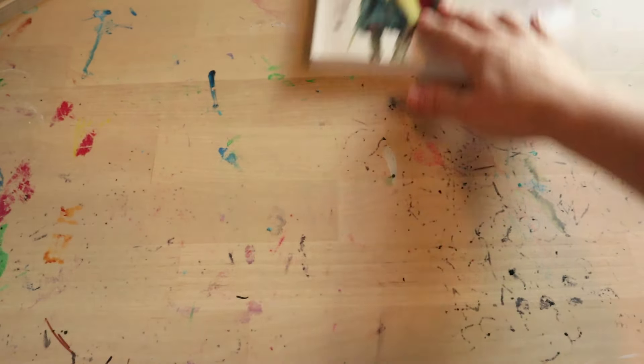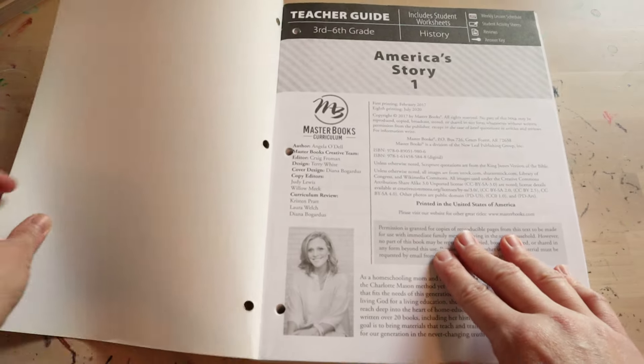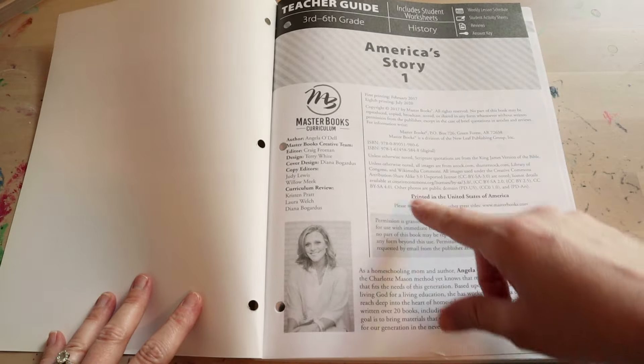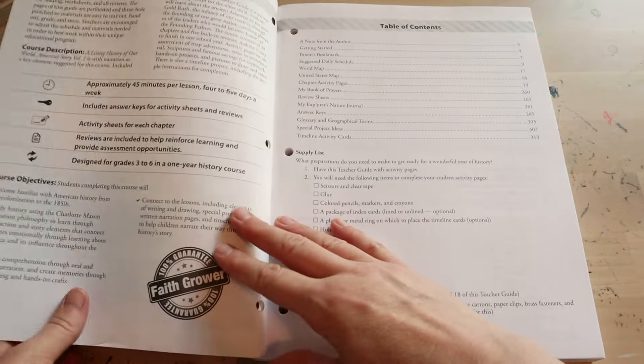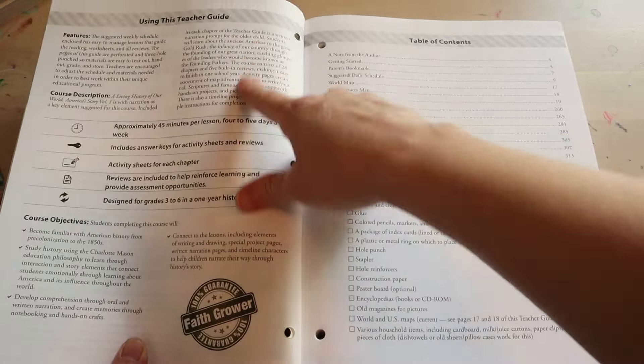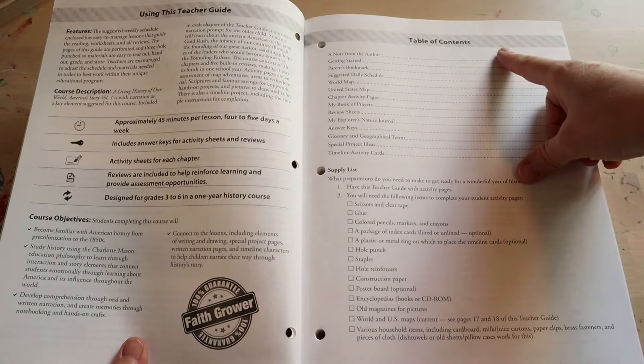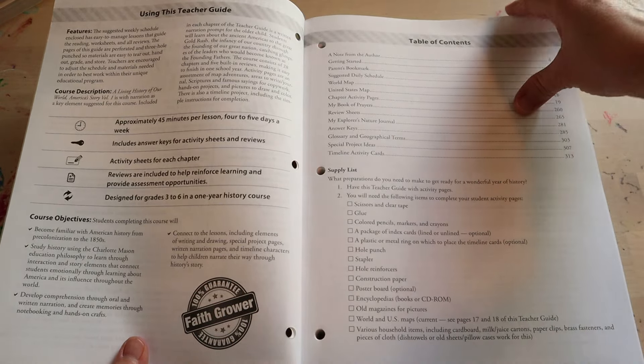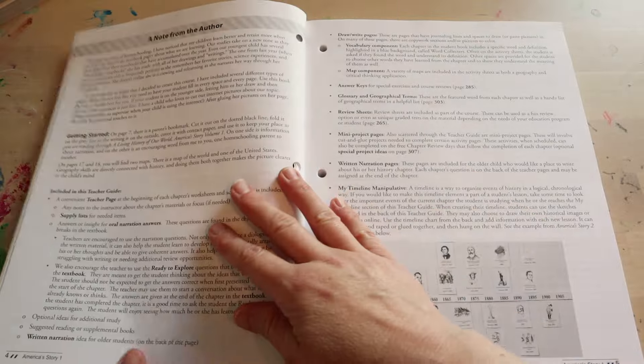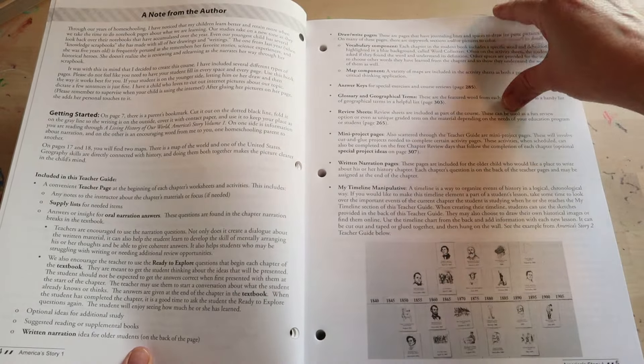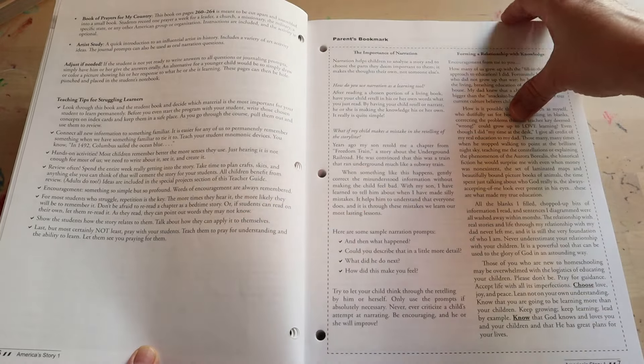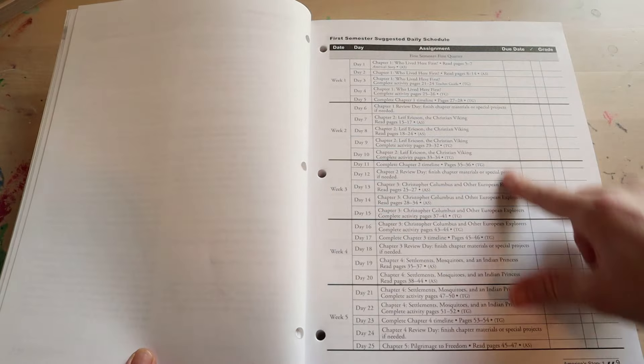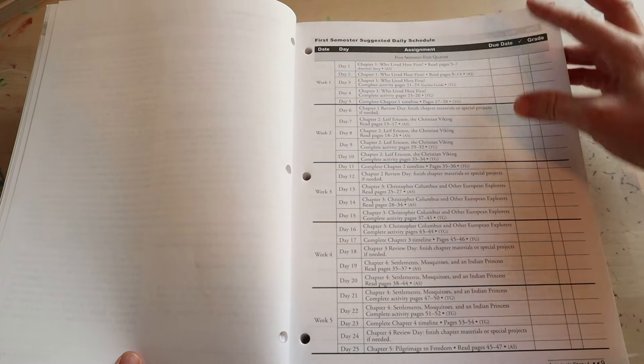Now I'm going to go on to the parent text. When you first open the teacher guide, you're going to get some information about the curriculum and a little quip about the author. Then you are going to get a using this teacher guide information section, a table of contents with a supply list, a note from the author on how to get started, what all you're going to come across in this curriculum, and then it jumps into your scope and sequence.